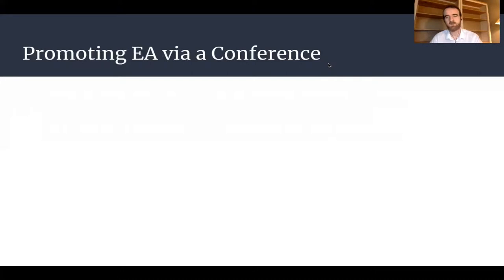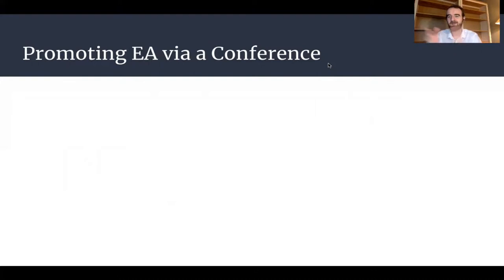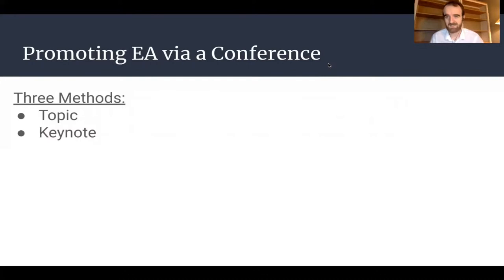There's also a real benefit in helping to improve the content being developed by early career EA researchers. Much of my best work happens when I can collaborate with others or get direct feedback on an argument or idea. Having a robust network of individuals sharing their work and building the field together can be extremely valuable. EAs in academia face a specific challenge: to identify work that is both academically successful — publishable and career-advancing — while also having an eye to impact, being useful for policy makers and addressing fundamental questions about how we can do the most good. I'm going to focus on three methods for shaping your graduate conference to promote EA: designing a topic that fits well with EA, inviting potentially aligned researchers for your keynote, and building a network of early career EA academic researchers.